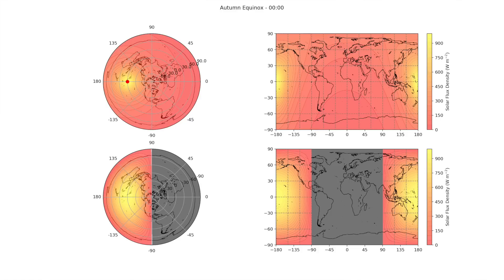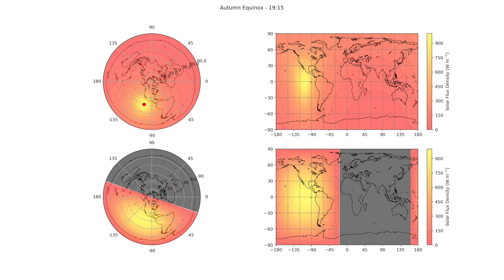At this point we haven't really figured out anything new — it is not much of a revelation to conclude that sunsets are not possible on a flat earth and nowhere would experience proper night. Moving to a different animation, we show the solar flux density across the surface of the earth. The top row shows the case of a flat earth and the bottom shows the spherical earth; the left column uses the AE projection and the right uses the Mercator projection, with a rough map overlaid. Yellow regions indicate high solar flux density, red shows low flux density, and gray means it is night.